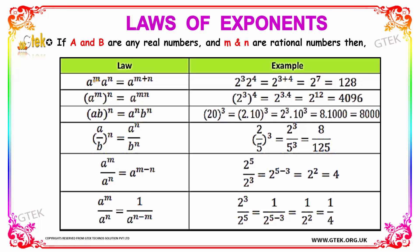The first law: base a exponent m times base a exponent n equals base a exponent m plus n. Instead of a, we have 2. So 2 to the power 3 into 2 to the power 4 — we can simply add the exponents: 3 plus 4, giving us 2 to the power of 7. The answer is 128, since 2 multiplied by itself 7 times equals 128.